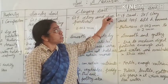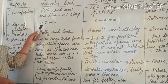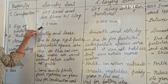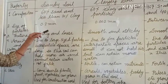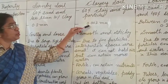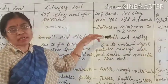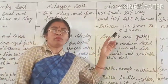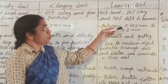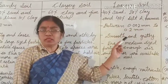That's why loamy soil is the best soil for plants. Now regarding particle size: in sandy soil the size of particles is nearly about 0.2 mm, while clay soil has very fine particles of nearly 0.002 mm only. Loamy soil has medium-size particles, between 0.002 mm and 0.2 mm.